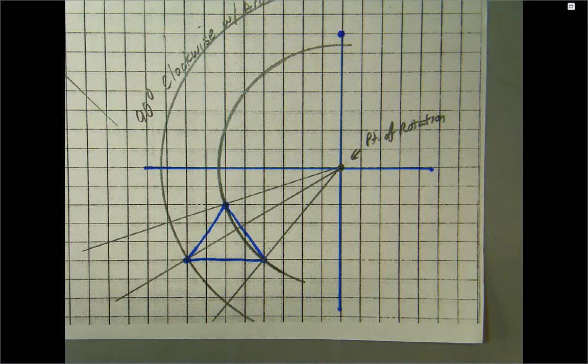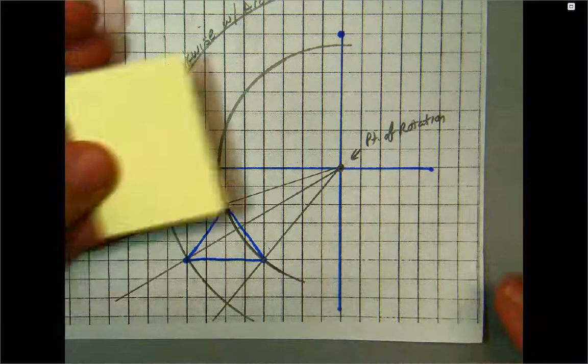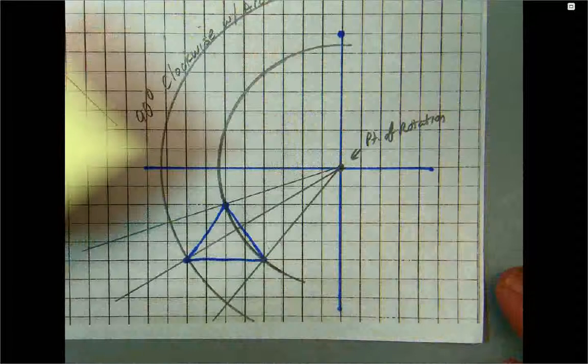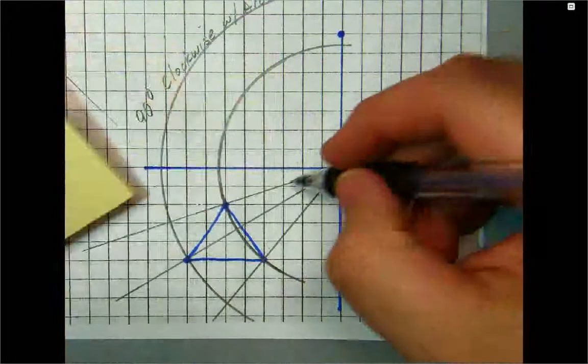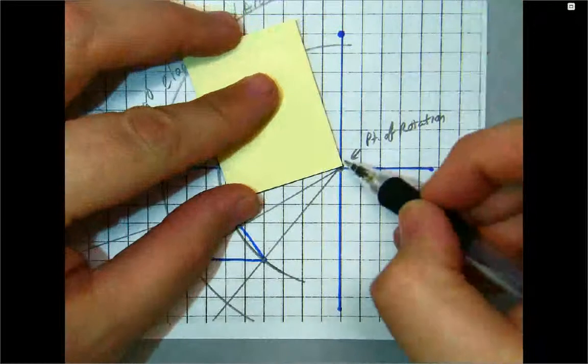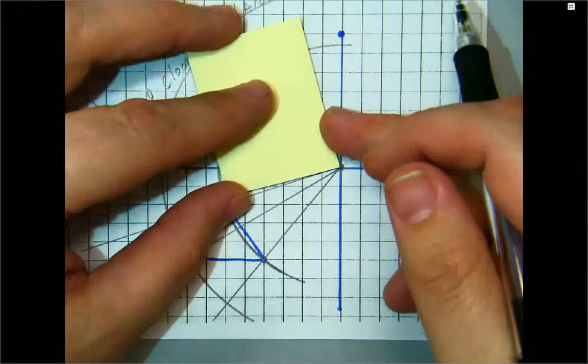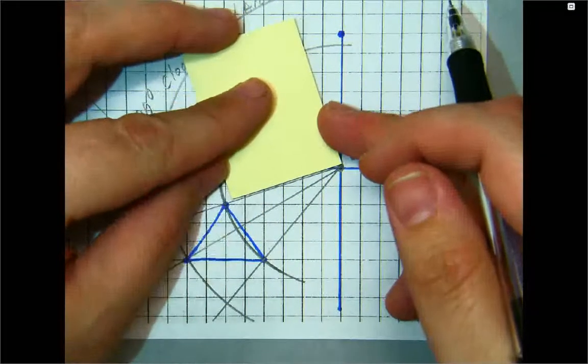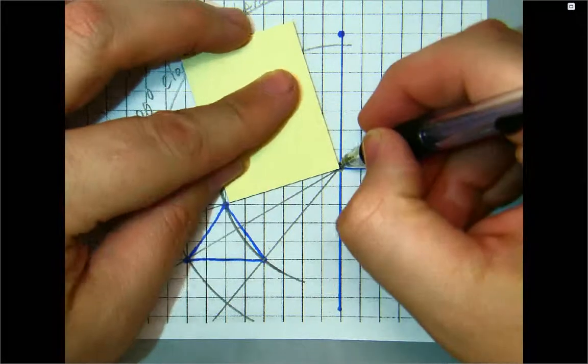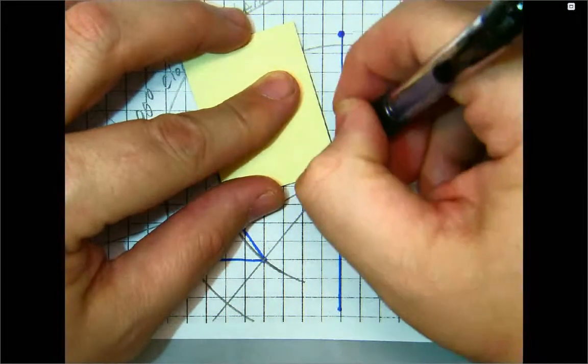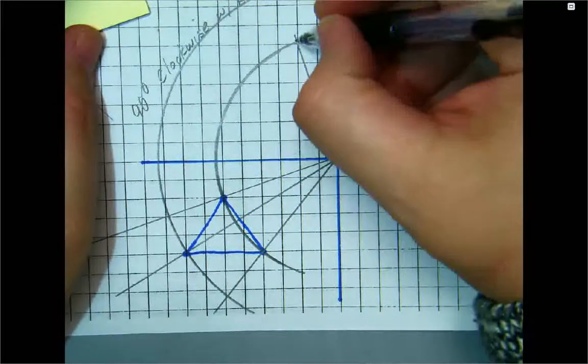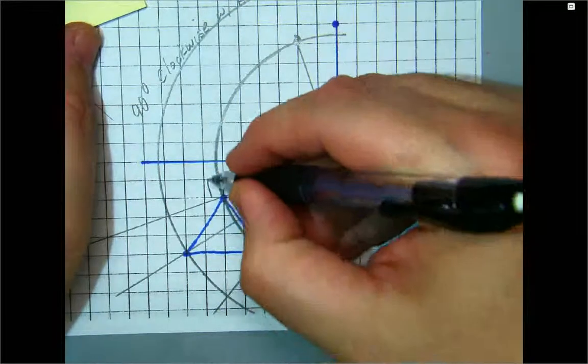And what I'm going to use is just some sticky notes. I'm going to take the first one and line up the sticky note at the point of rotation. Line up one side here. And that creates a 90 degree angle. That intersects right here. If that's point A, there's my A prime. There's a 90 degree rotation there.